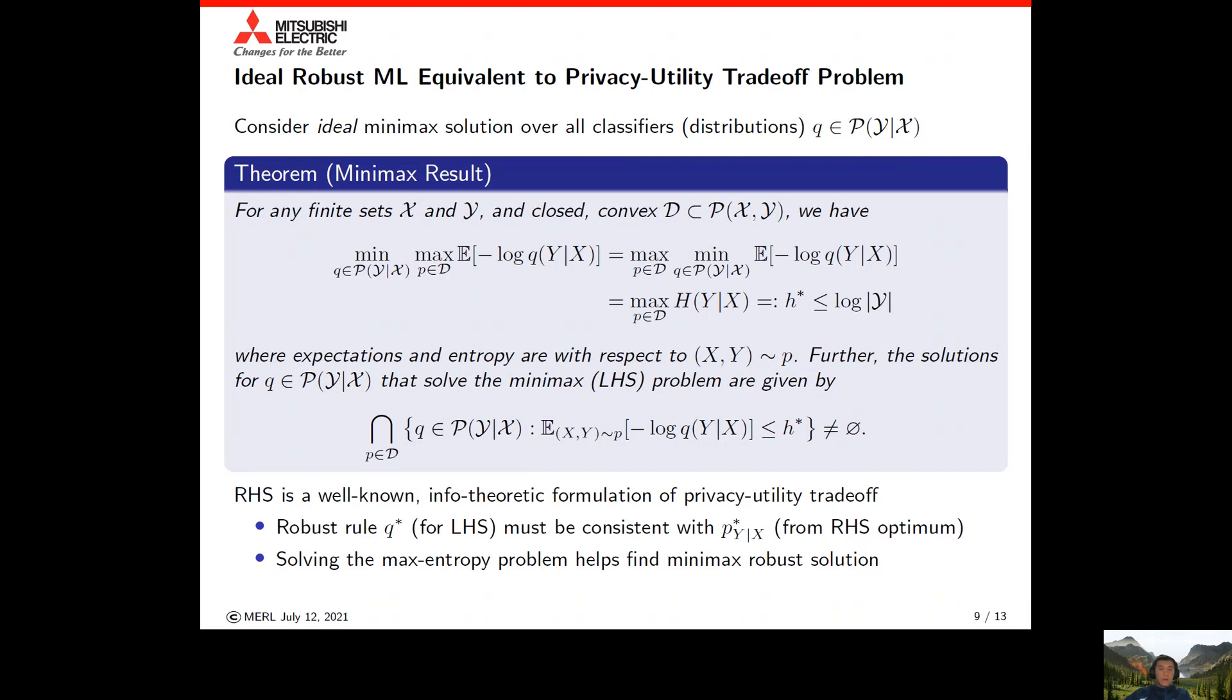Our core theorem is a min-max result that equates the idealized robust machine learning problem to the privacy utility tradeoff problem. We consider an idealized version where the solution space is all possible classifiers represented by all possible conditional distributions or decision rules. The result essentially establishes that you can swap the order of the min and the max.